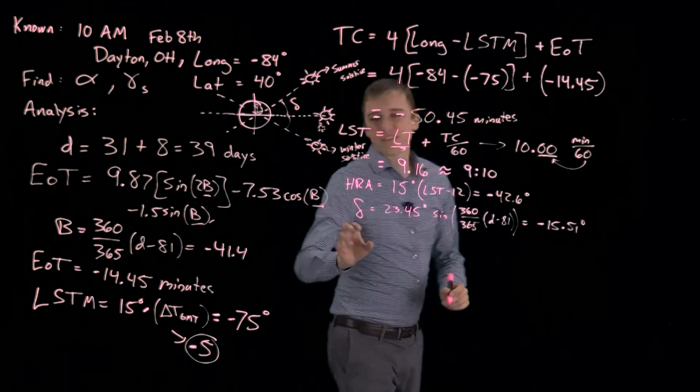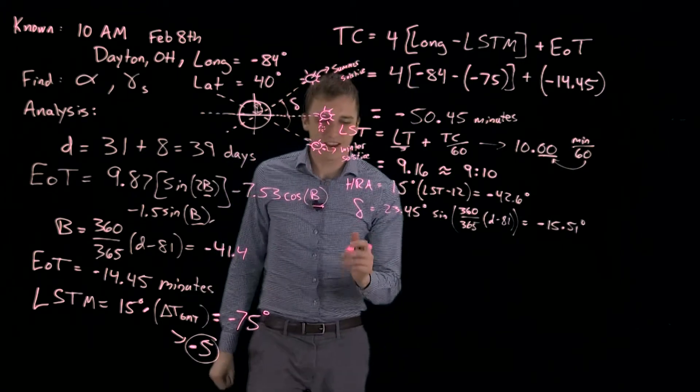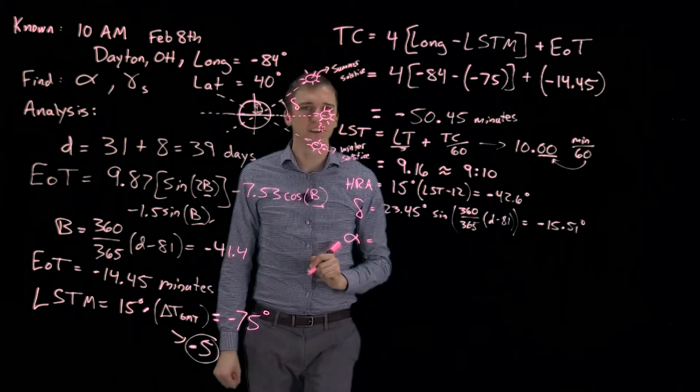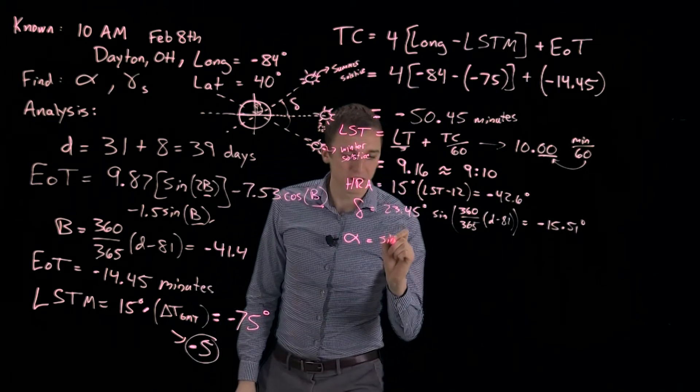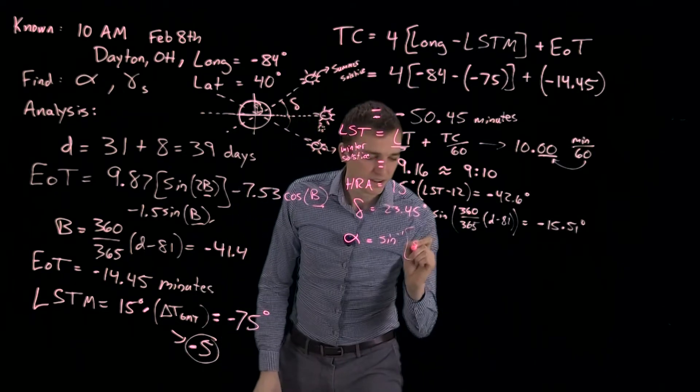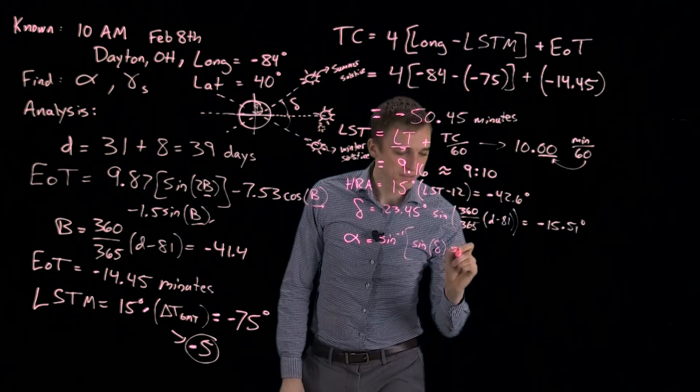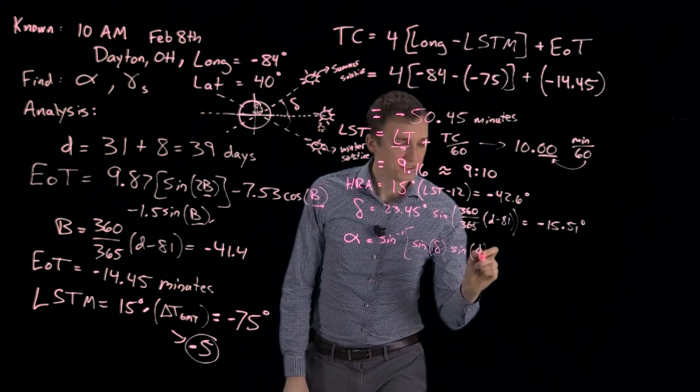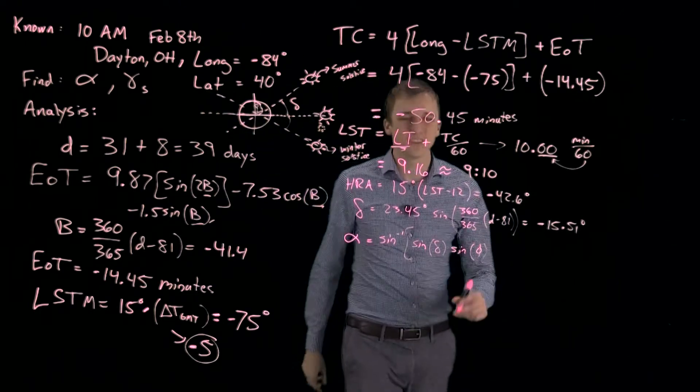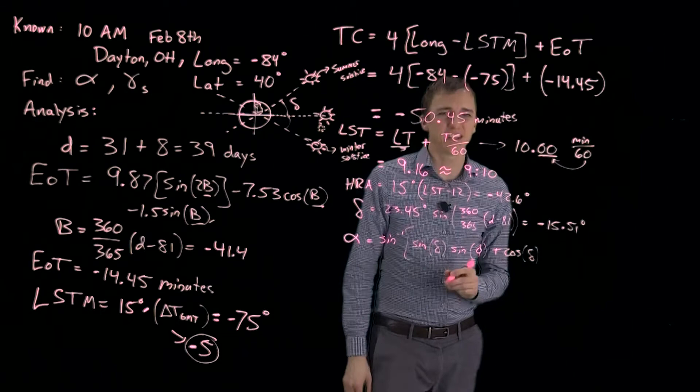Okay, we have the declination angle and the hour angle. We are now ready to find the solar elevation, alpha, which is a little bit long, but we're going to write it out. That is the inverse sine of the sine of the declination angle times the sine of phi, which is the latitude. Remember, latitude, flatitude.